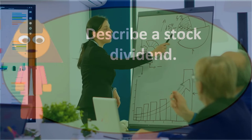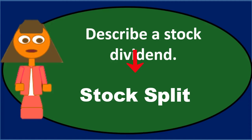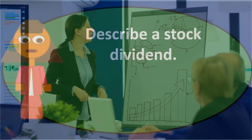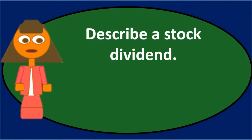Instead of cash, stockholders receive a further equity interest through a stock dividend. A stock dividend is different from a stock split, because a stock split doesn't affect retained earnings or the paid-in capital account — only the par value and number of shares change. With a stock split, the actual numbers for common stock, paid-in capital, and retained earnings on the financials stay the same.